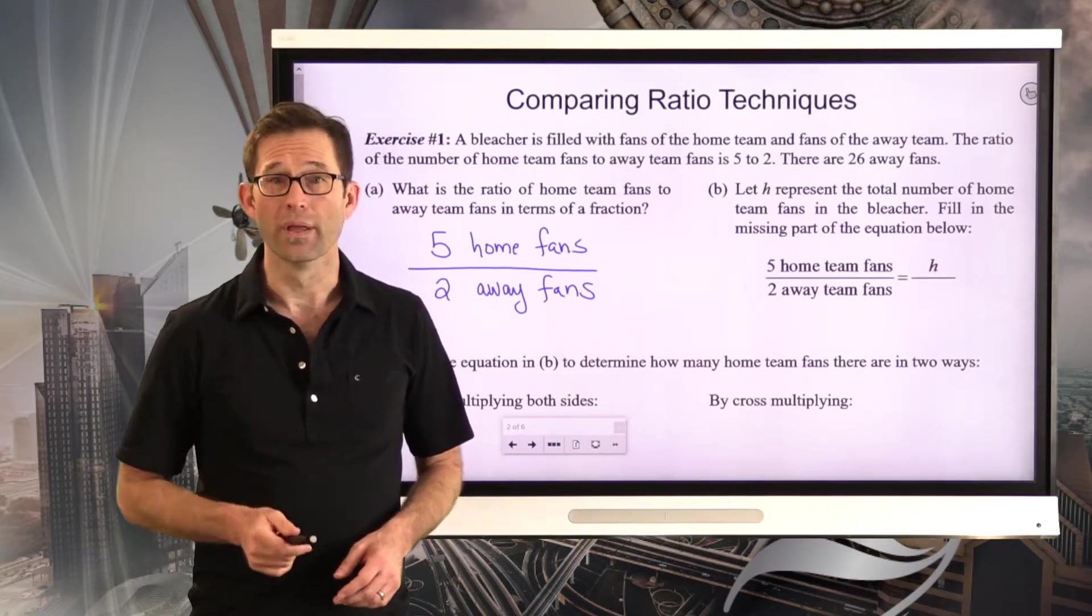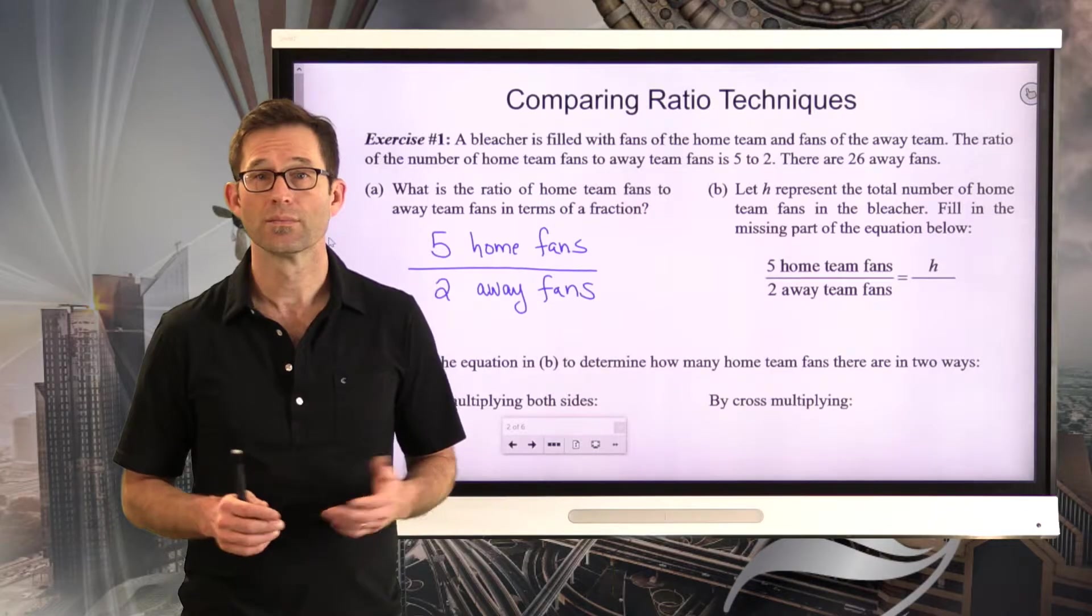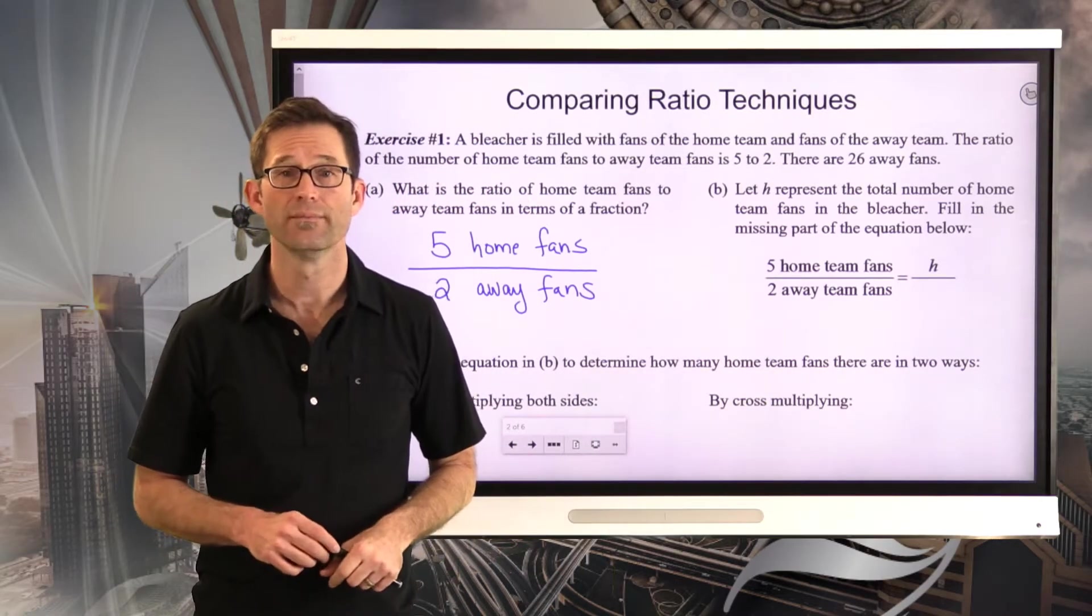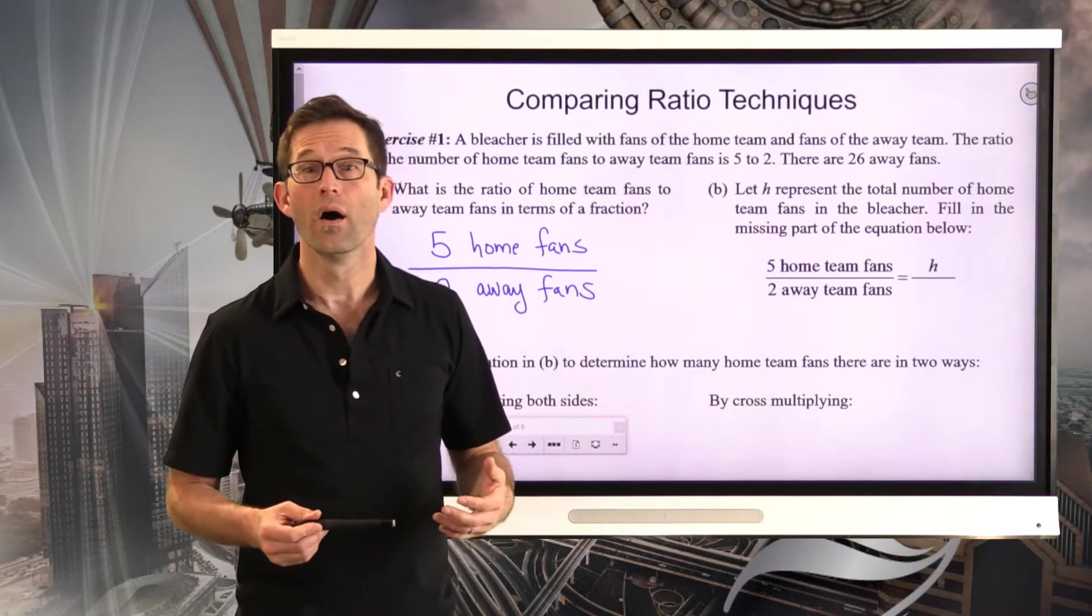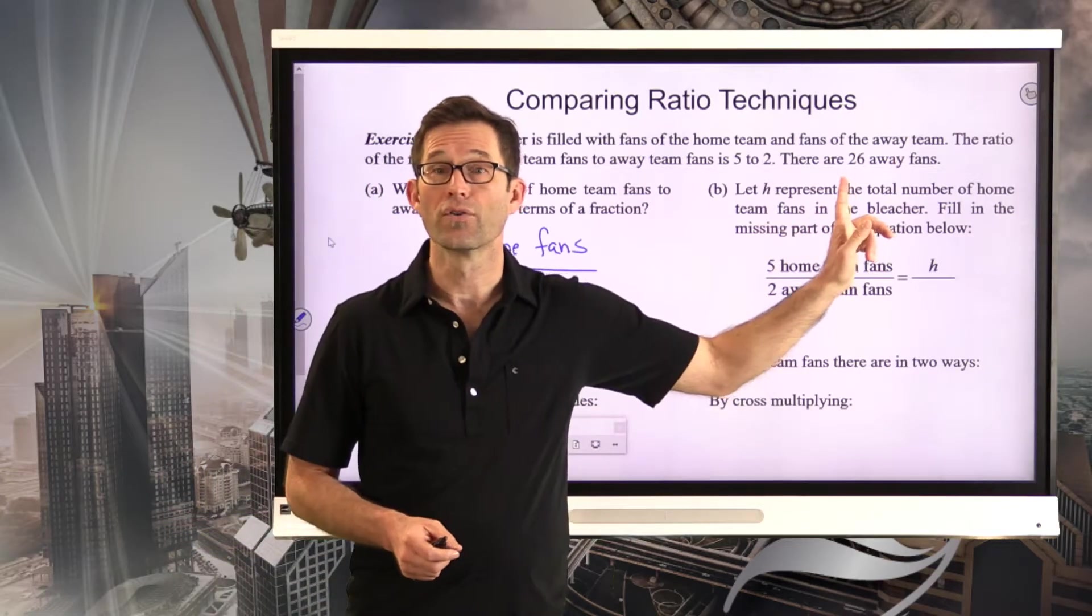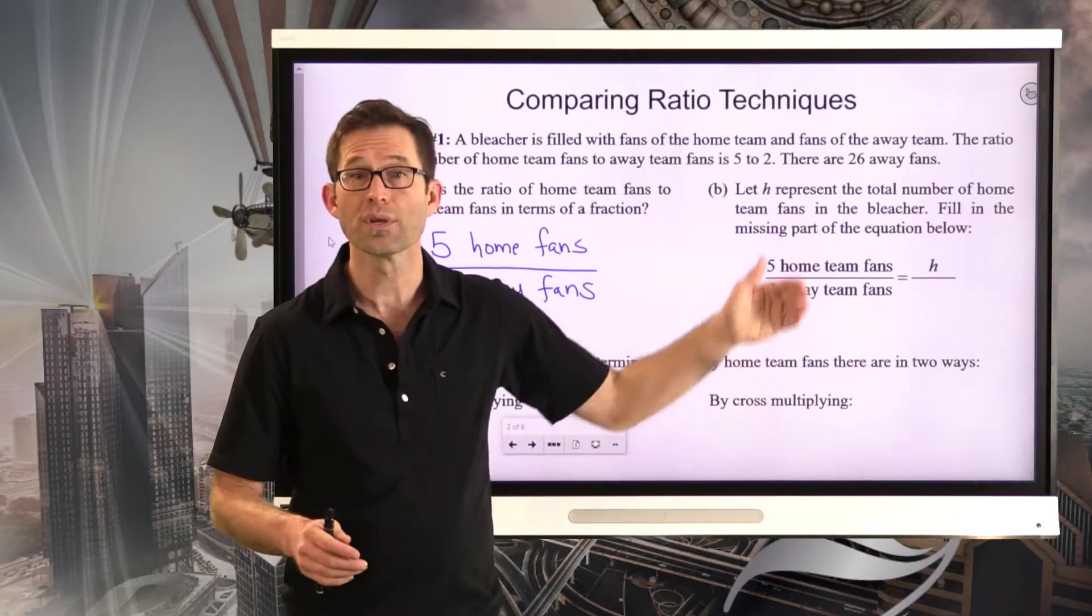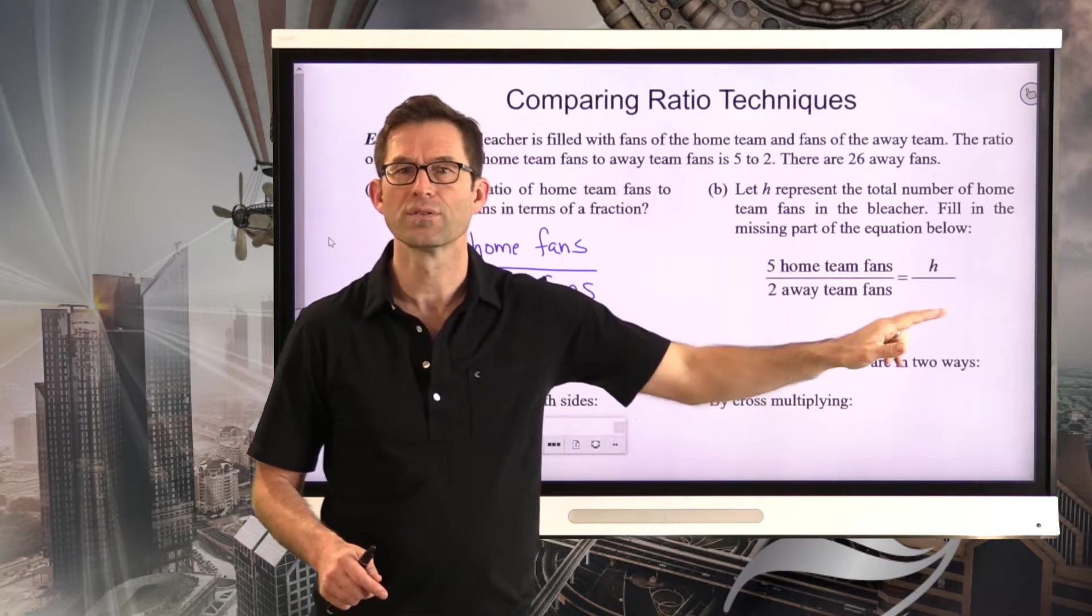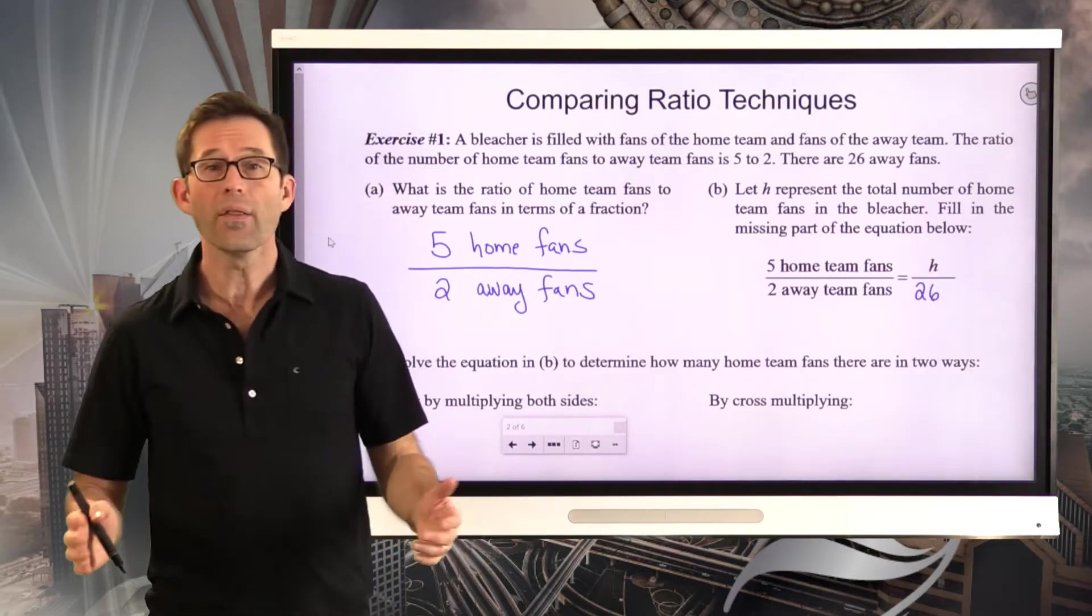Now letter B. Let H represent the total number of home team fans in the bleacher. Fill in the missing part of the equation below. So what should I put in this missing denominator? Pause the video and think about that for a second.